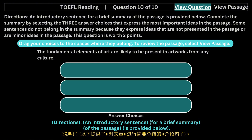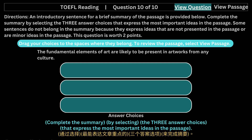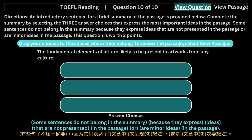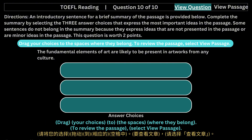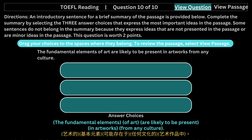Question 10 of 10. Directions: An introductory sentence for a brief summary of the passage is provided below. Complete the summary by selecting the three answer choices that express the most important ideas in the passage. Some sentences do not belong in the summary because they express ideas not presented in the passage or are minor ideas. This question is worth two points. Drag your choices to the spaces where they belong. To review the passage, select View Passage. Introductory sentence: The fundamental elements of art are likely to be present in artworks from any culture.